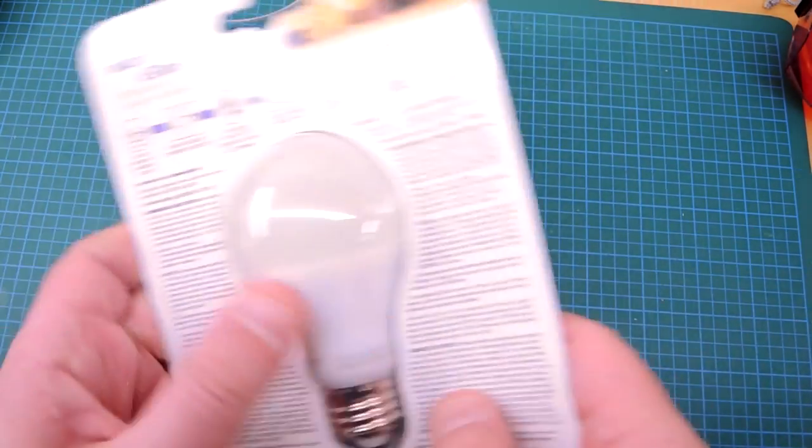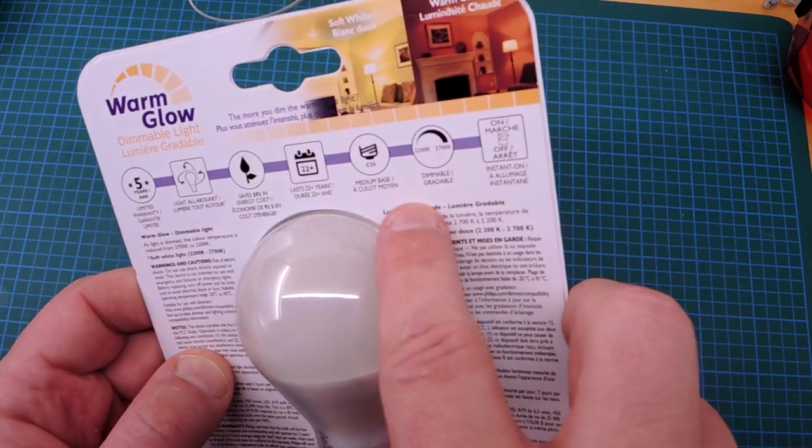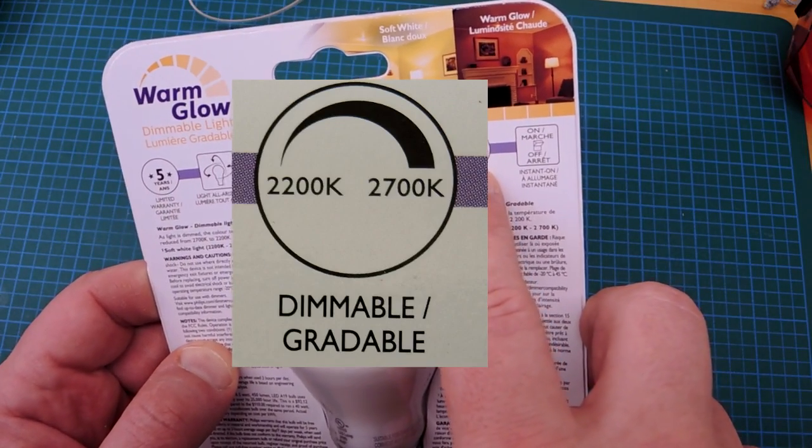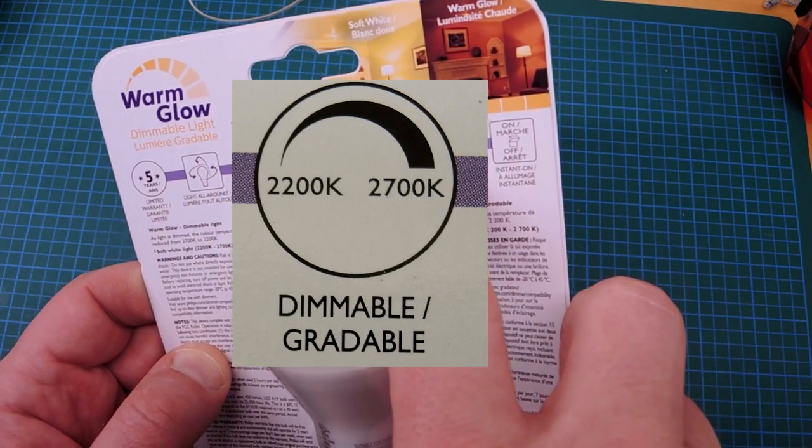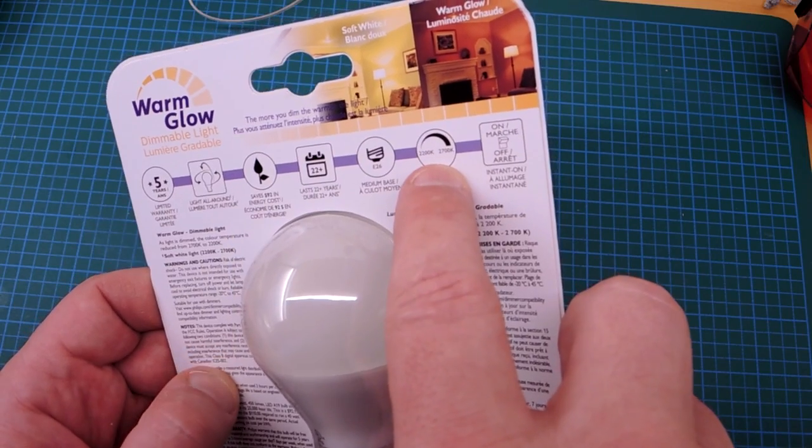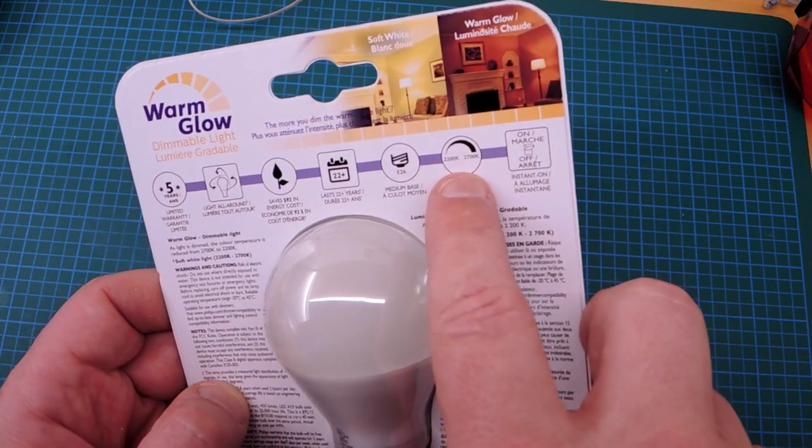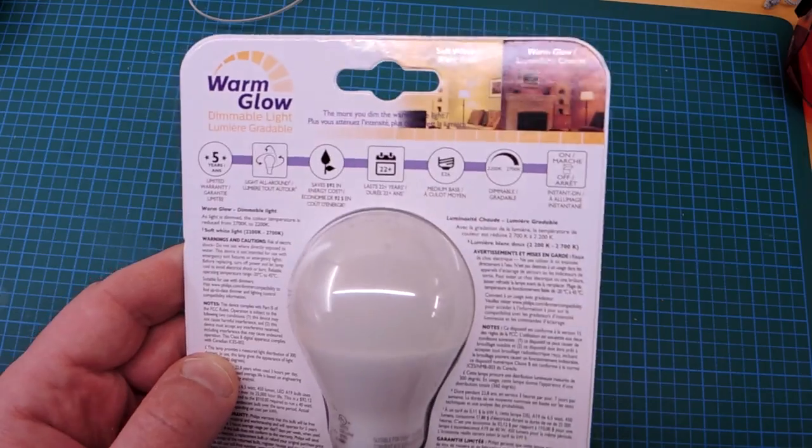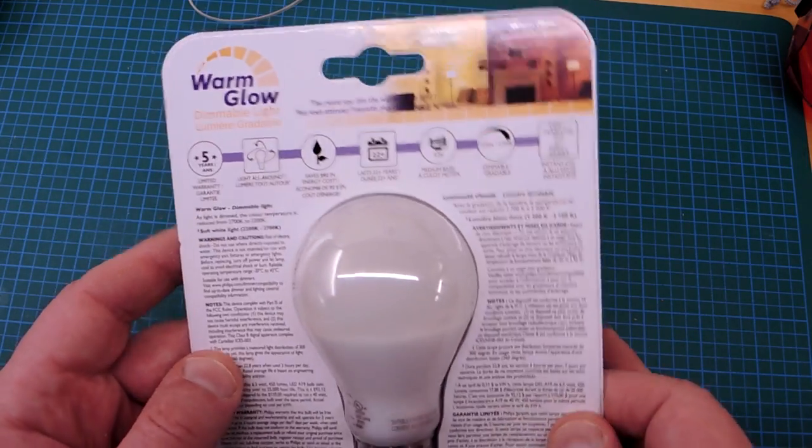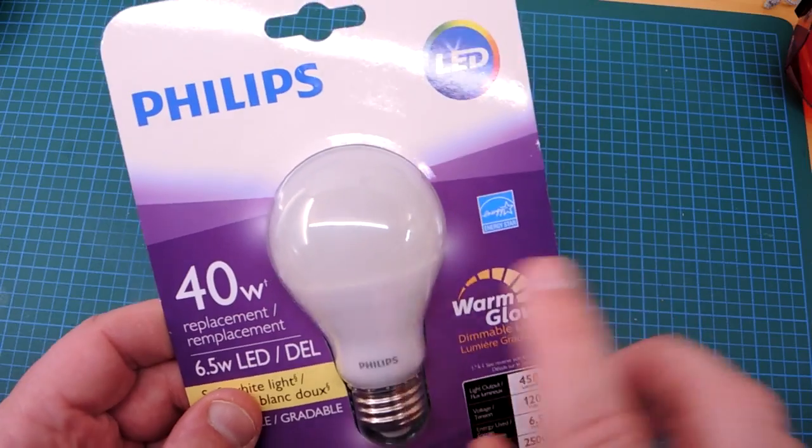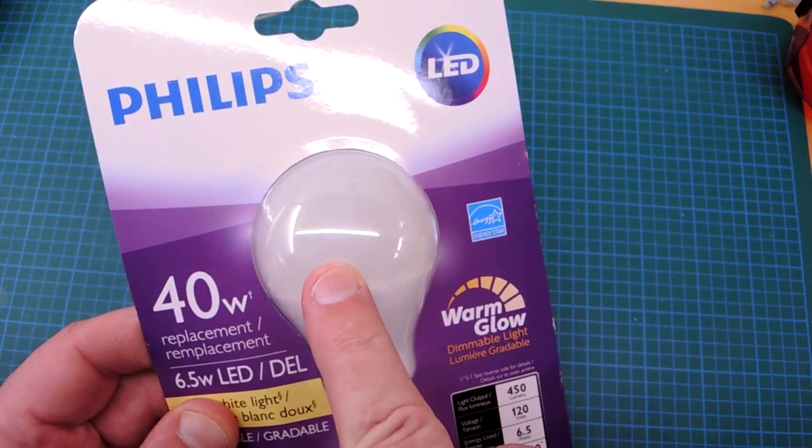It says Warm Glow, and if you flip it over there's a larger picture that states the bulb can be dimmed from 2700 Kelvin down to 2200 Kelvin. Basically it can become warmer as it gets dimmed, and that's quite unusual. That's not a normal behavior of a white LED. So something cool is going on inside this bulb.